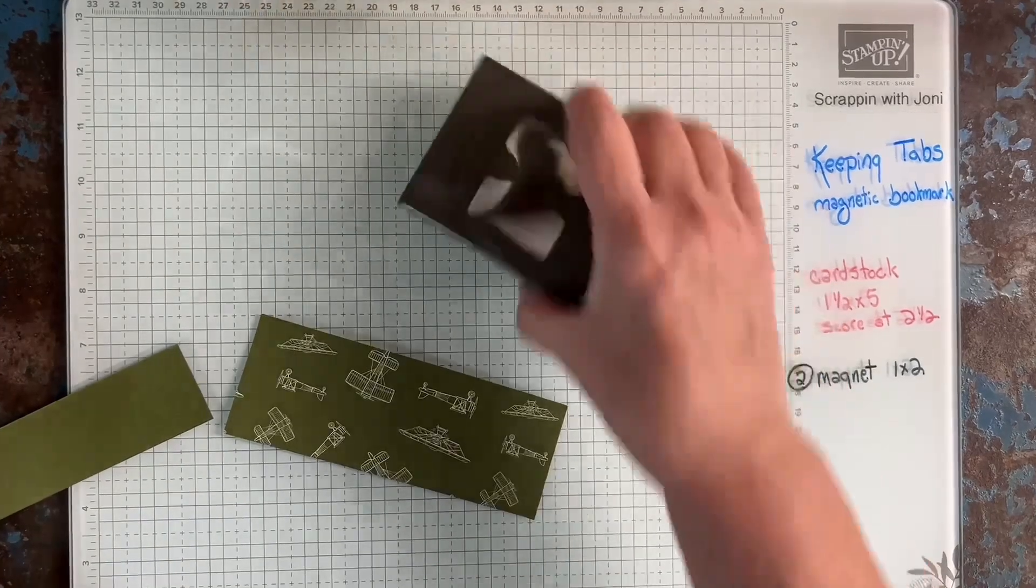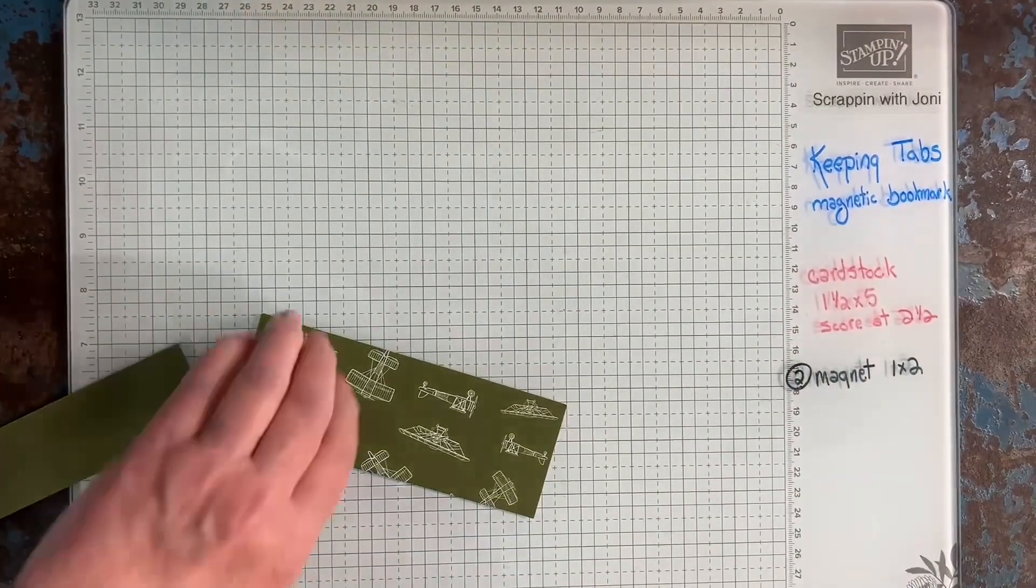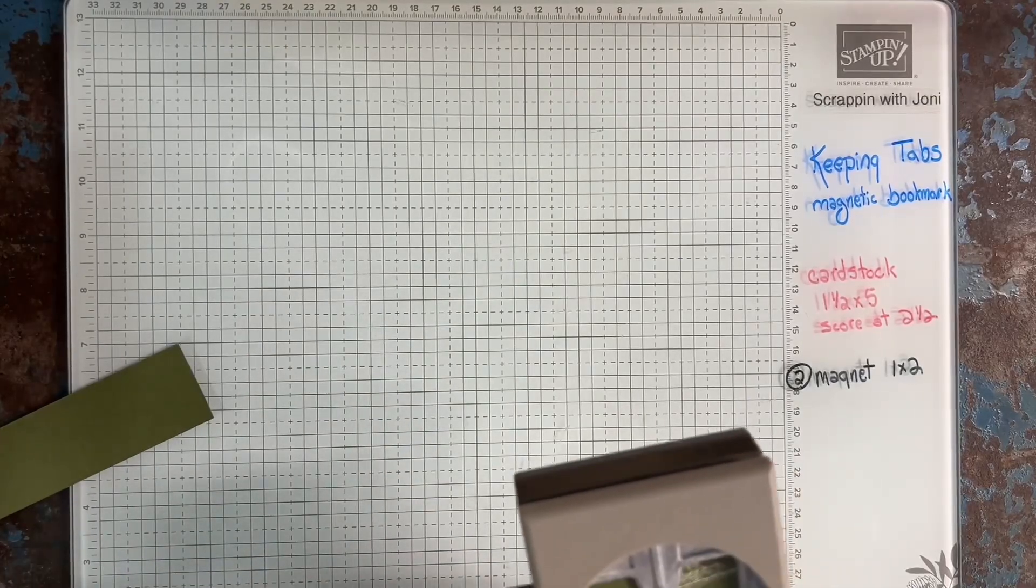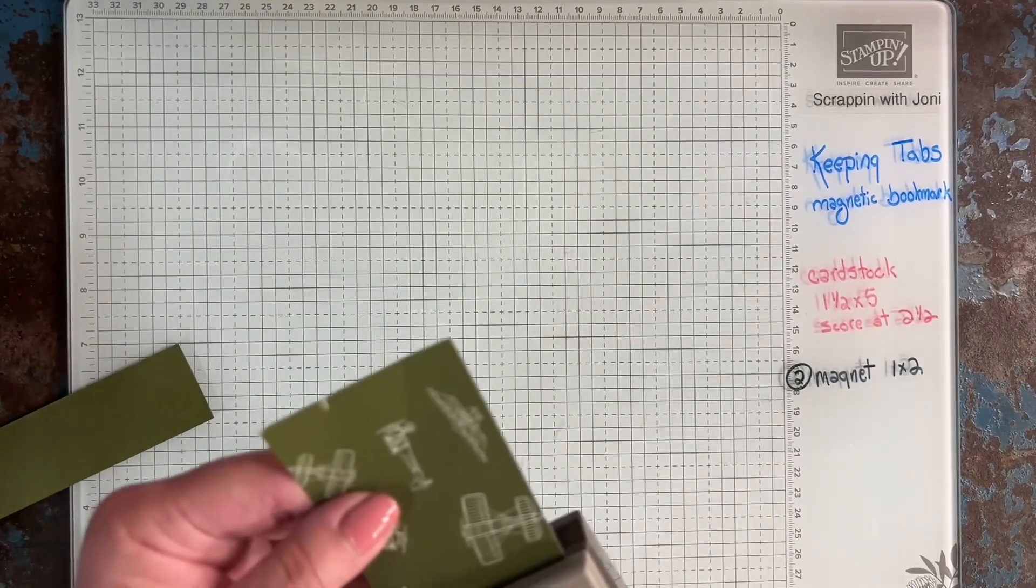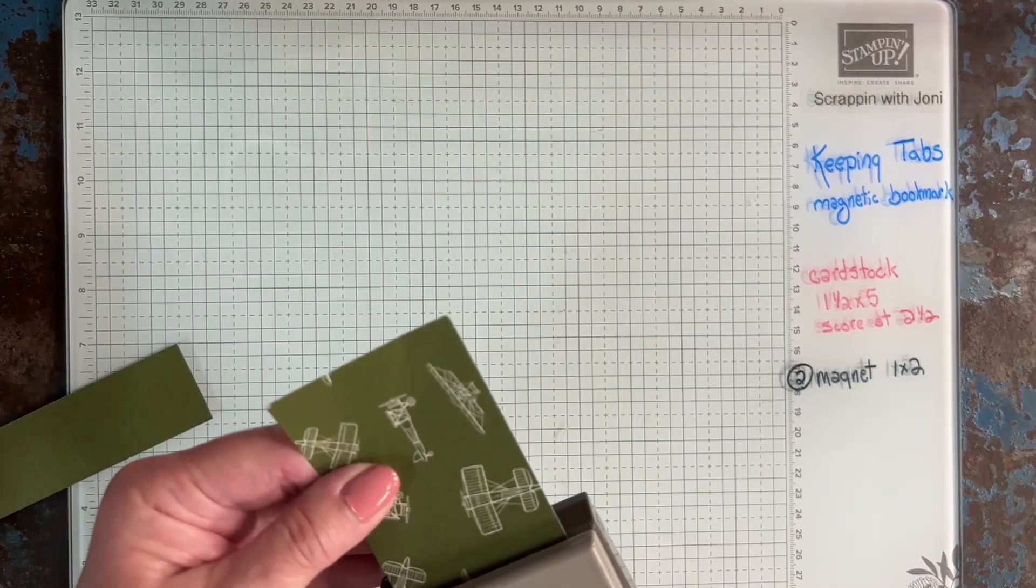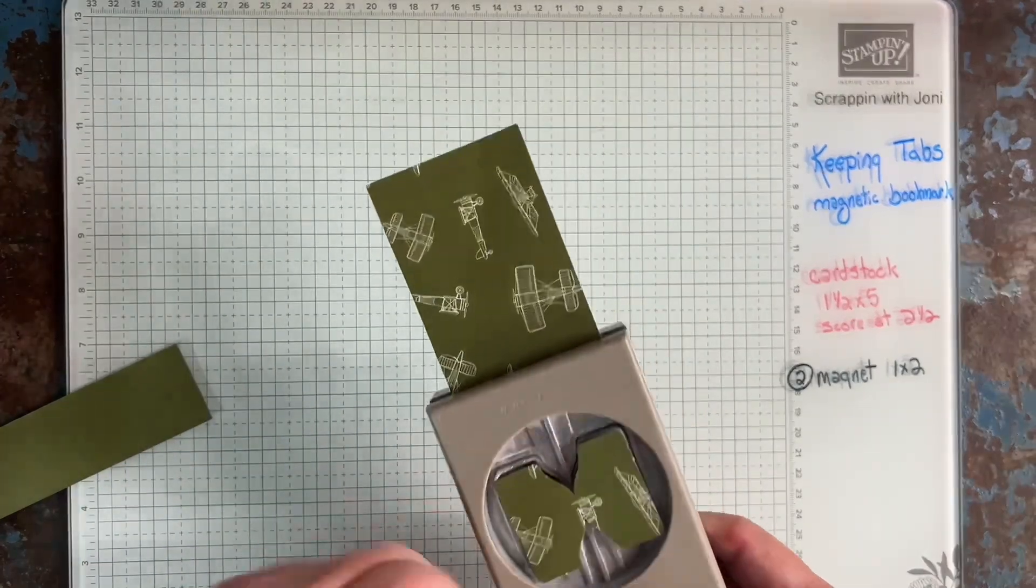This is so quick and easy. So I'm going to use the punch. You could use the die. And we're just going to punch out. I probably spend way too much time picking where I'm going to punch my paper. Don't be like me. Just punch.